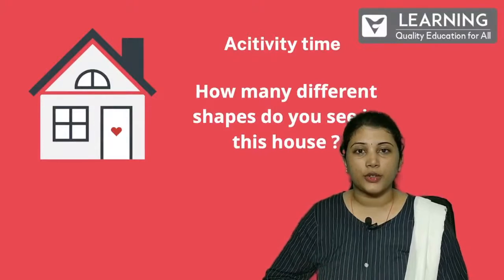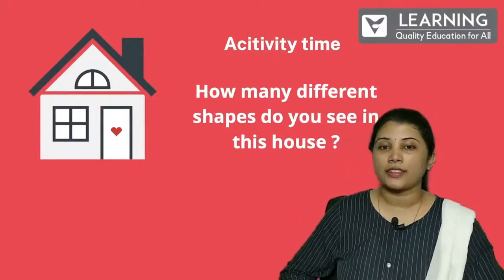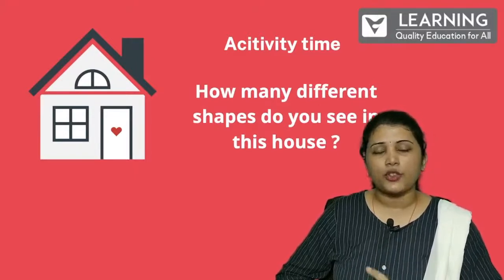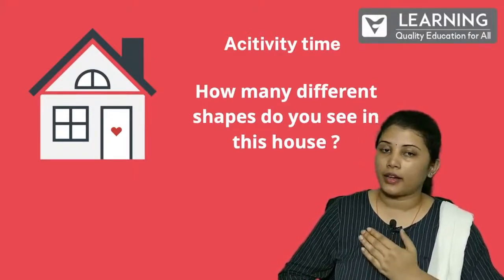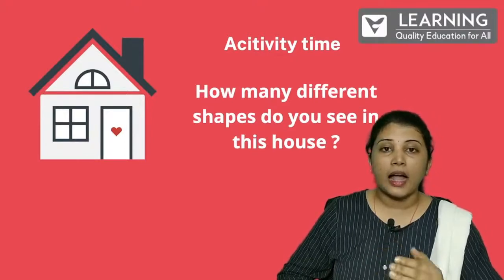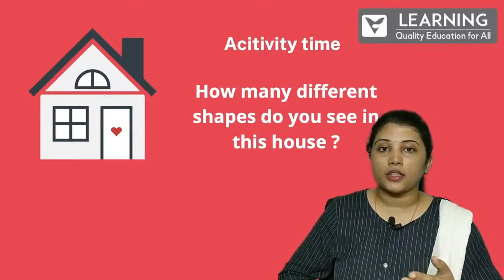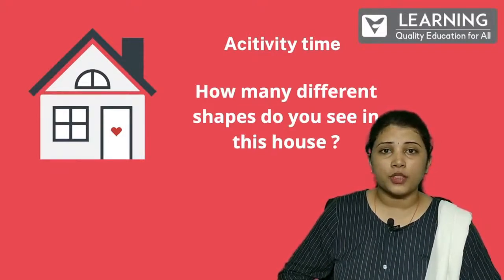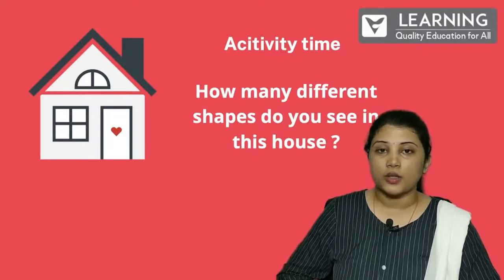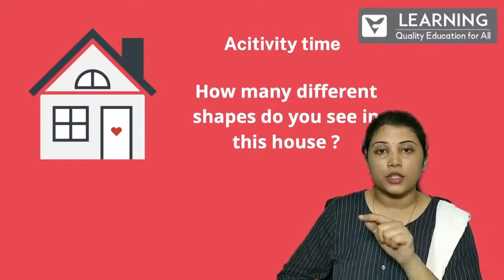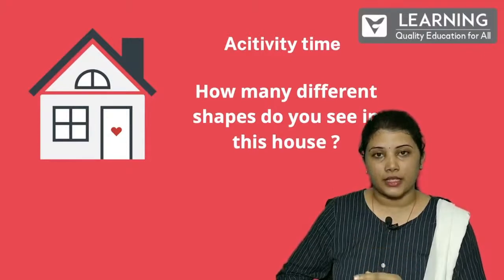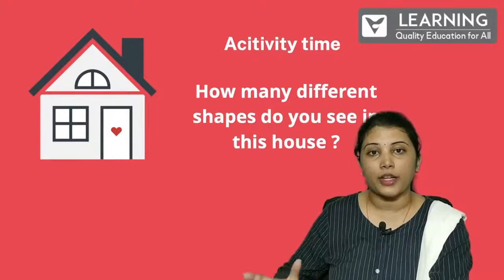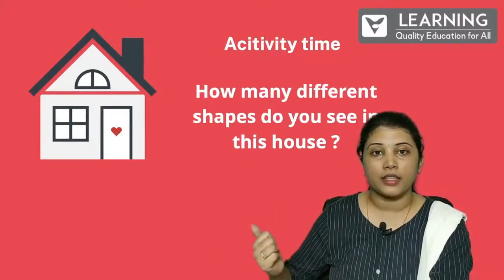It's a house — do you see? A house formed with different shapes. Can you just tell me how many different shapes are here in this house? I see rectangle, triangle, square, and even circle — but circle is missing. Wait, there is a half circle out there. You can also count and tell me in the comments how many shapes are there in this house.